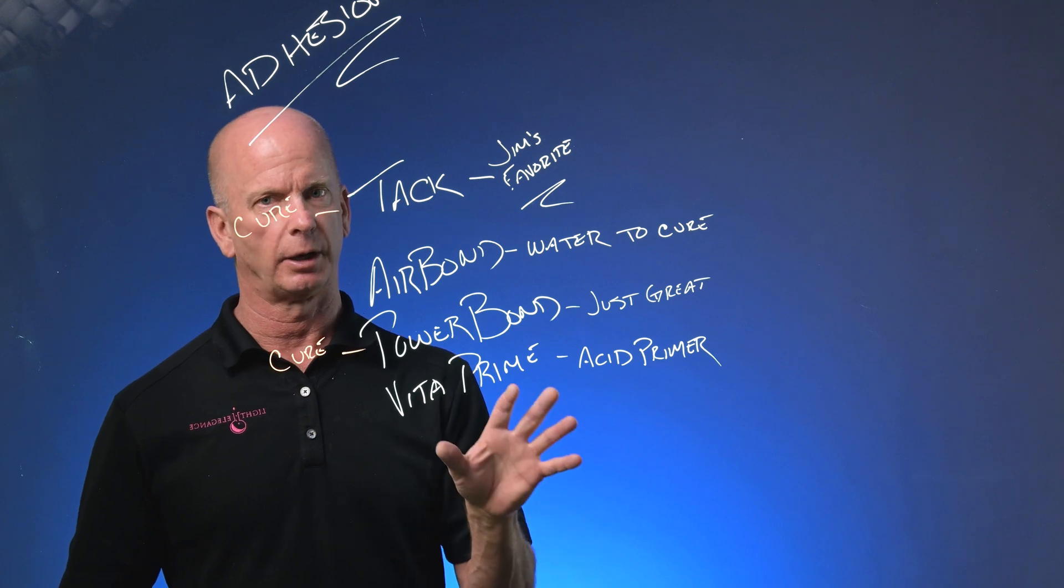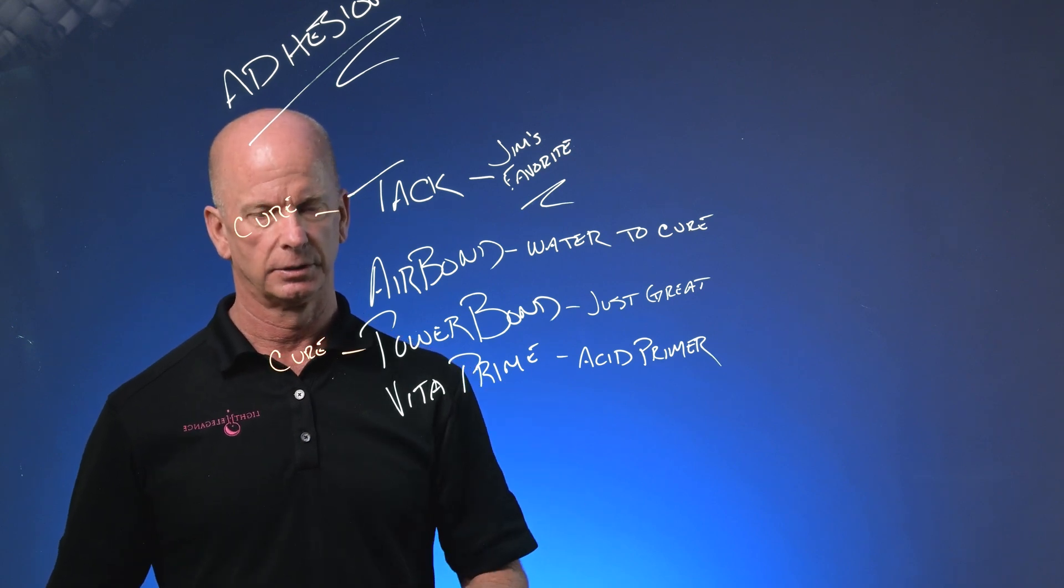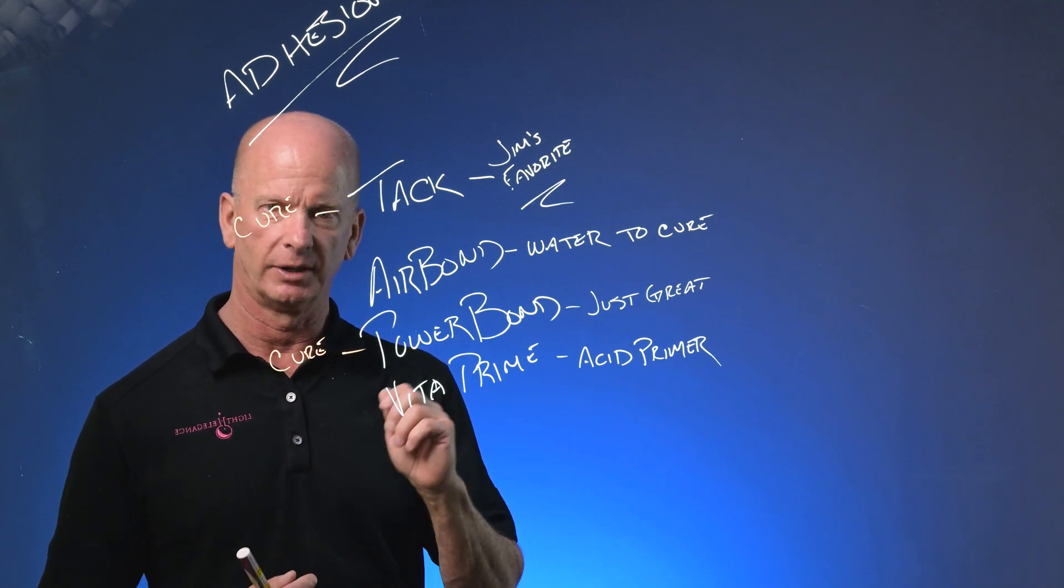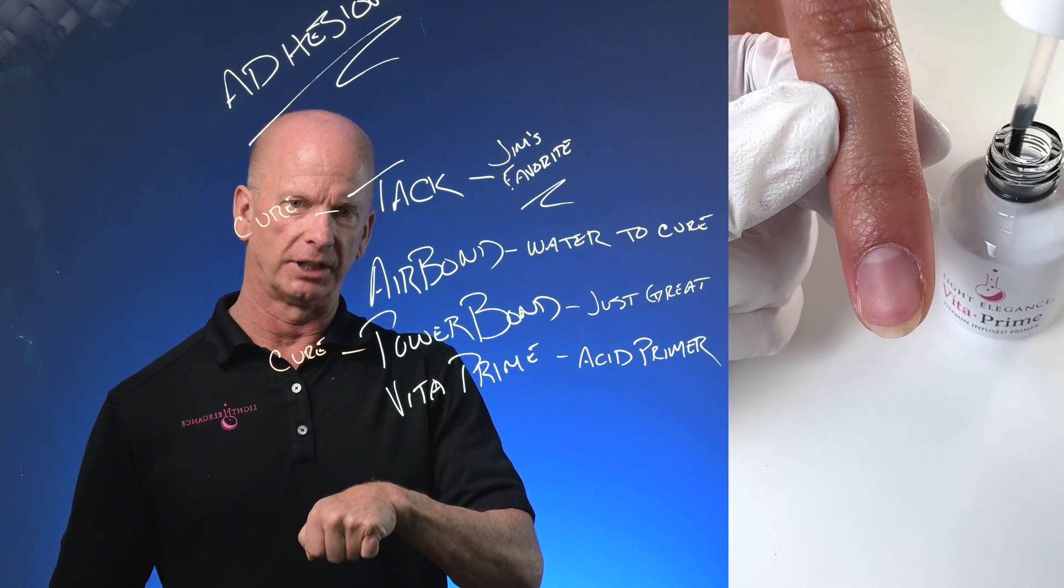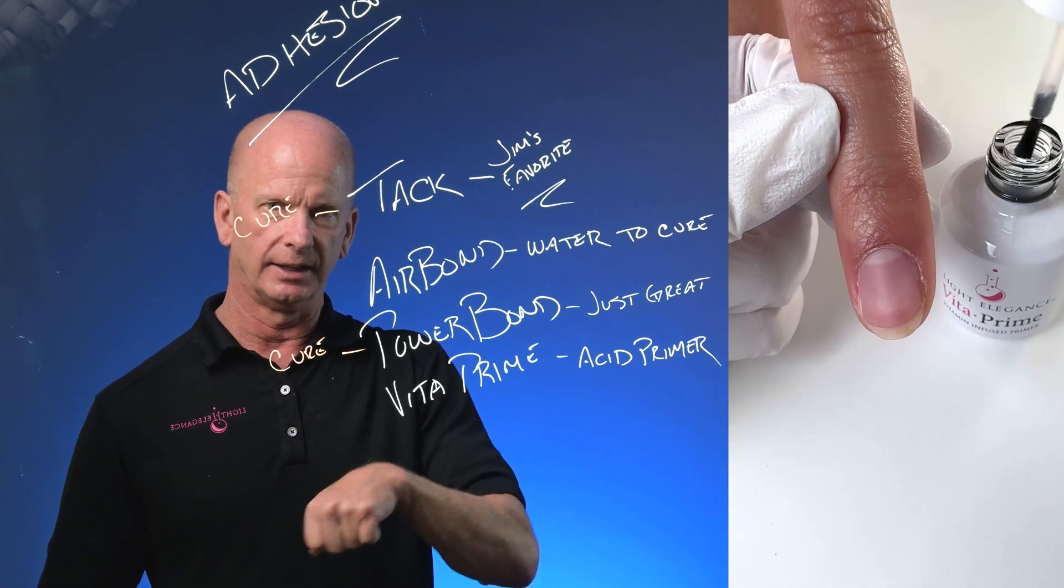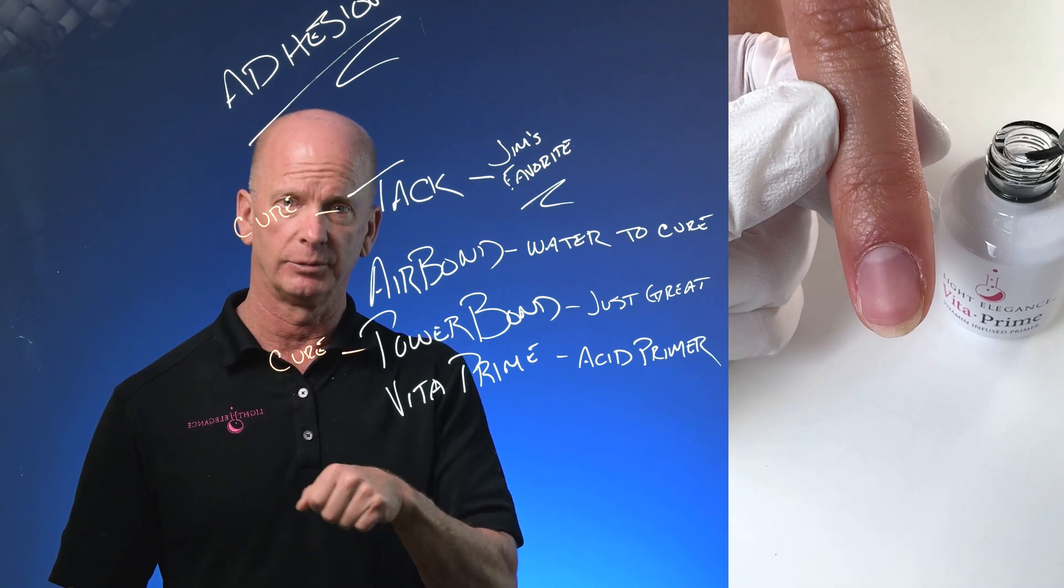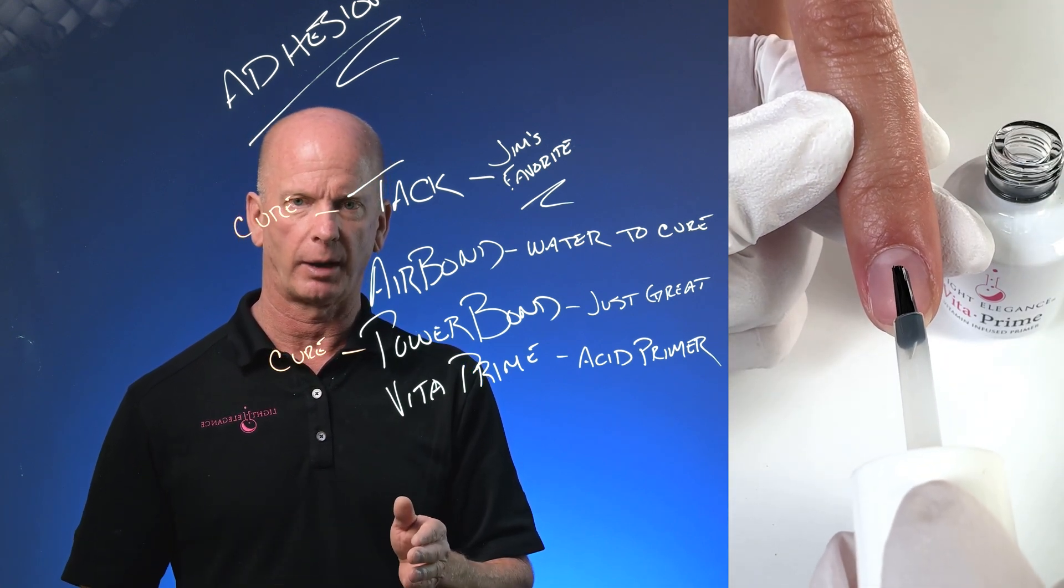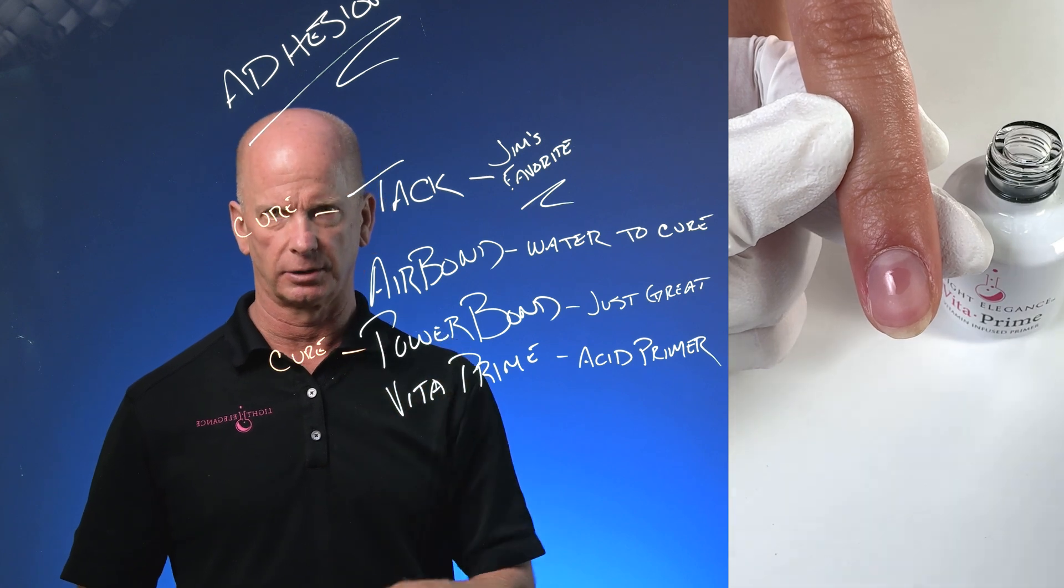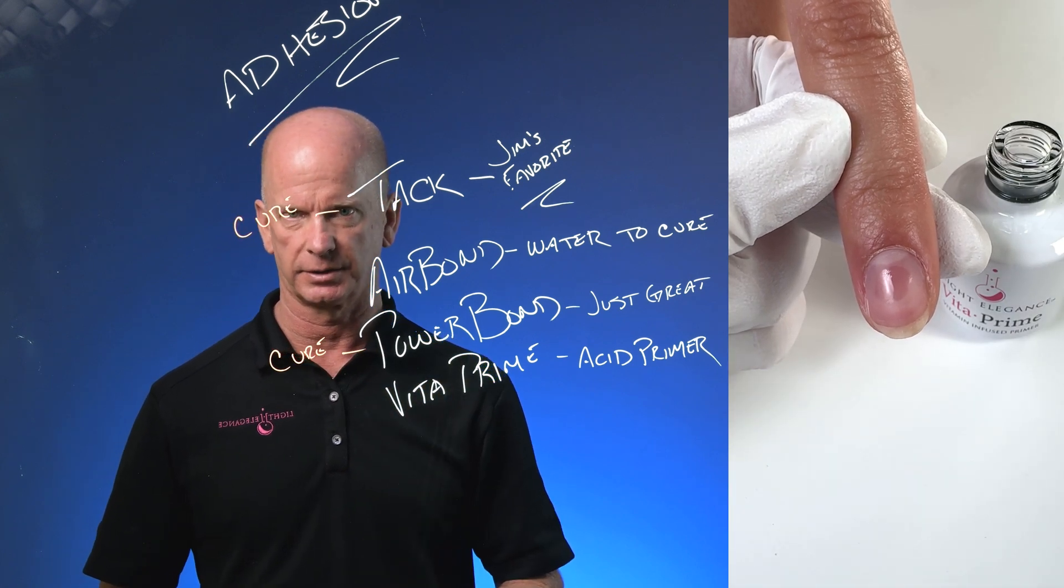Bottle's got to be warm because Vita Prime will freeze. So if Vita Prime is liquid, you can shake it, you can hear it. If it's liquid, you pull the brush out. I wring it around the inside of the neck of the bottle about 10 times and then brush it off four times on top of that bottle. Pull it out and touch it to the surface of the fingernail, only on the fingernail itself.